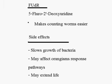FUDR is used to make counting worms easier by inhibiting progeny — that is, preventing the worms from replicating and making more of themselves, so they are much easier to manage. There are some side effects, though: it slows down the growth of bacteria, which is the worms' food source.